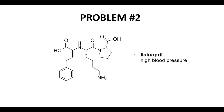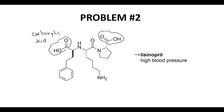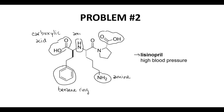Our second drug is lisinopril, used to treat high blood pressure. On the left, we have an OH with a carbonyl — this is a carboxylic acid. If you notice in the upper right, there is another carboxylic acid, so we have two carboxylic acids here. We have a benzene ring. We have this NH2 — this is an amine. This is also an amine: a simple nitrogen attached to carbon groups. And in the middle here, we have a nitrogen that is next to a carbonyl, so that is not an amine — that is an amide. So lisinopril contains a whole collection of different organic functional groups.